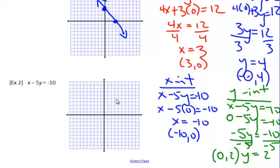So let's plot them. Negative 10, zero — counting over to negative 10 — that's the x-intercept right here. And then the y-intercept is at (0, 2), which is right here. And we can graph that.